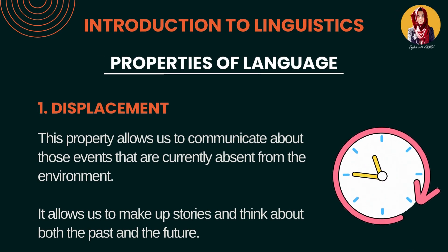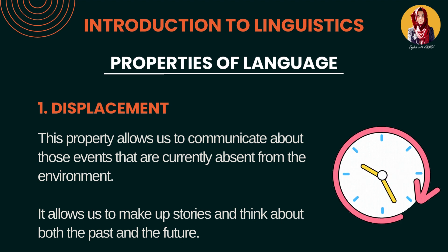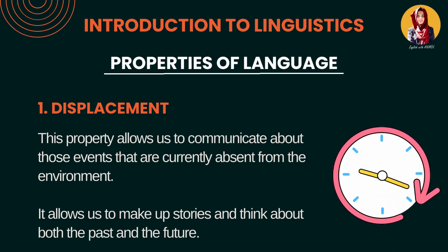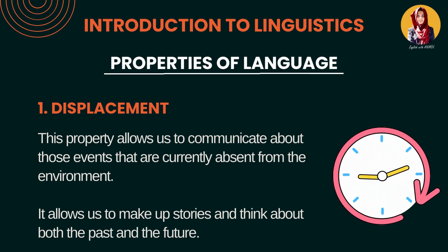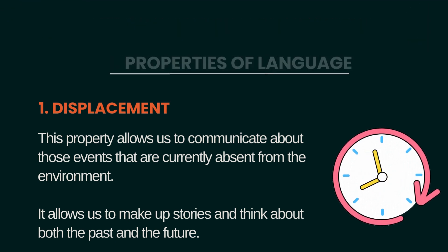Displacement. Displacement language ki woh quality hai jis mein hum log aapas mein communicate kar sakte hain — present, jo ke chal raha hai; past, jo ke guzar chuka hai; or future, jo ke hone waala hai. Toh hum har tarah ki time ko discuss kar sakte hain — past ko bhi, present ko bhi, or future ko bhi.